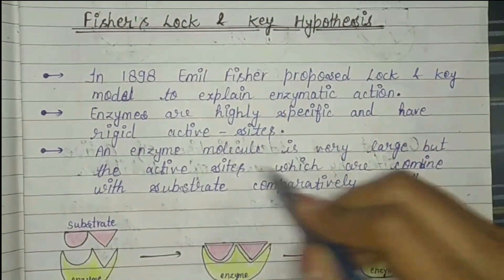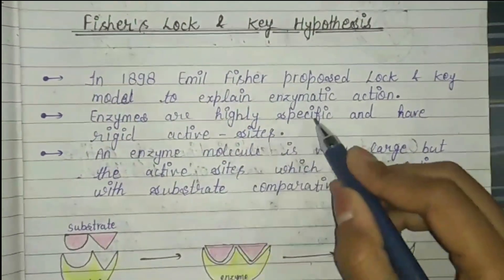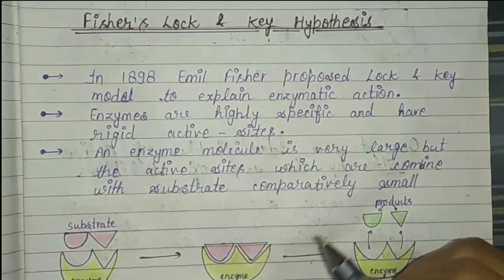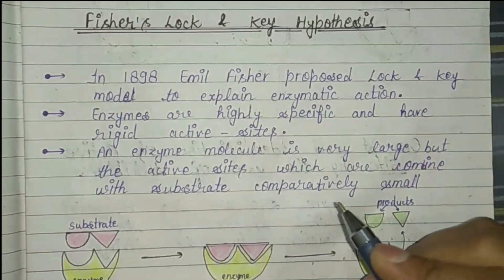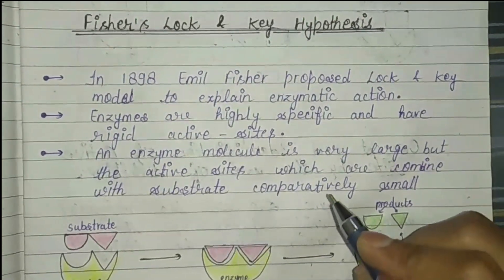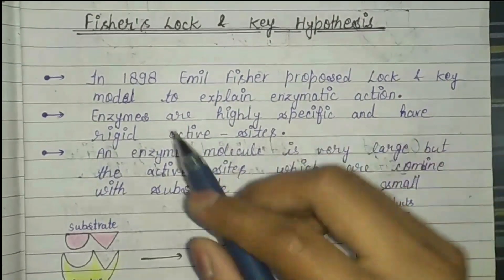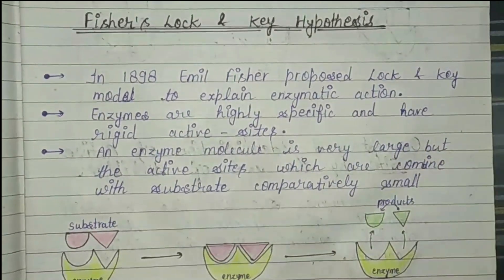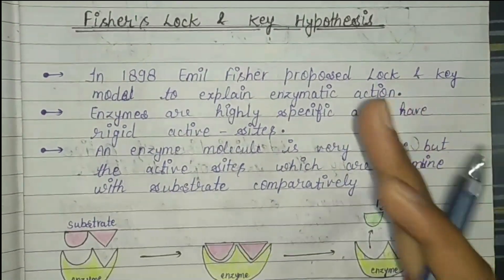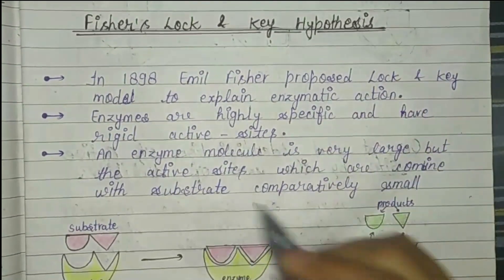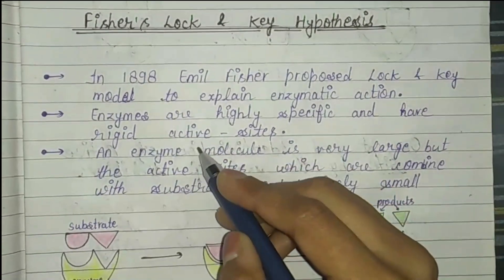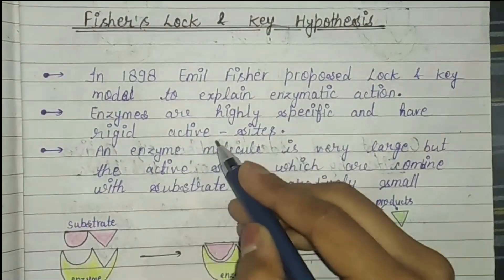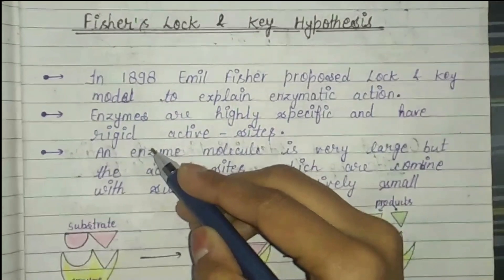We know that enzymes are highly specific — a particular enzyme reacts with a particular substrate. In Fisher's lock and key hypothesis, the main point is that any enzyme has an active site, and it is very rigid.